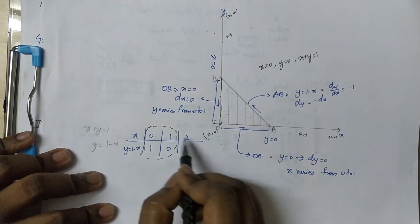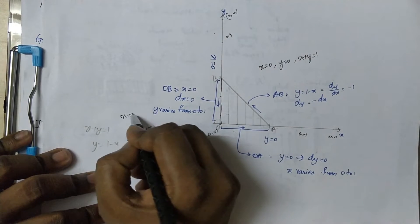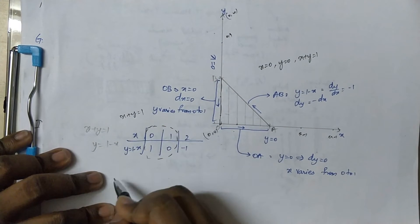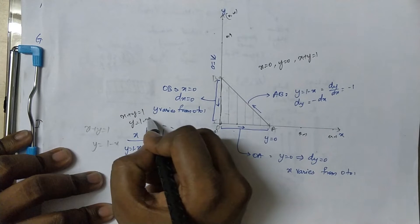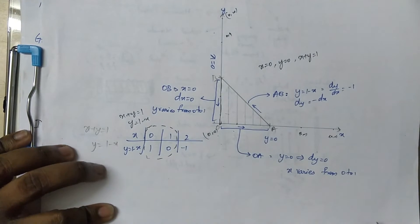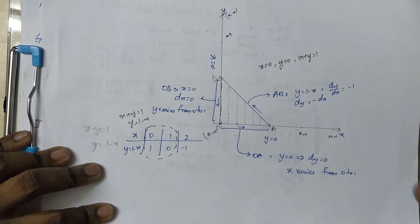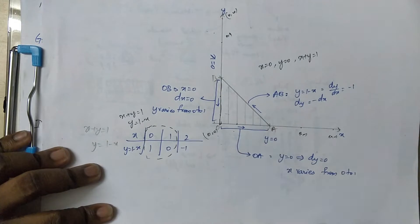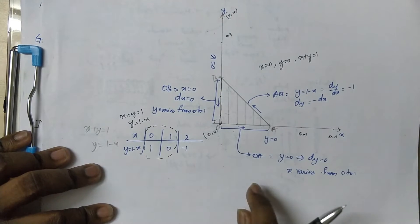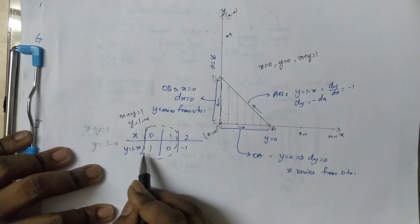x plus y equal to 1. One coordinate will be equal to 1. So y equal to 1 minus x. So x ranges from 0 to 1. And y is equal to 1 minus x.